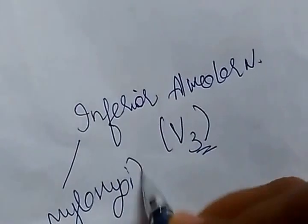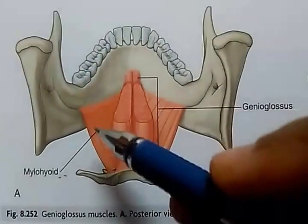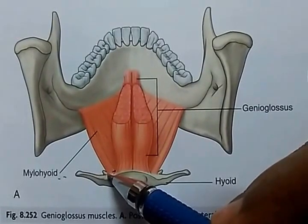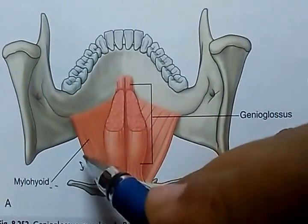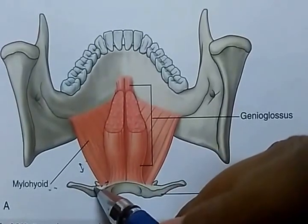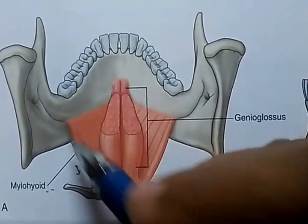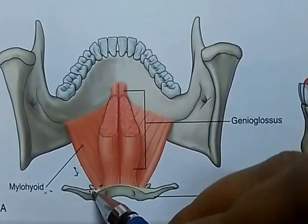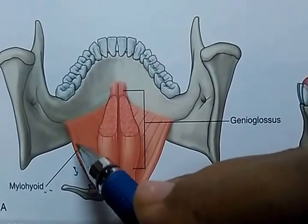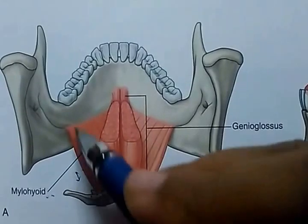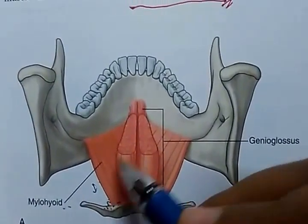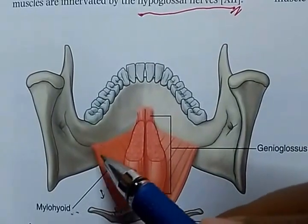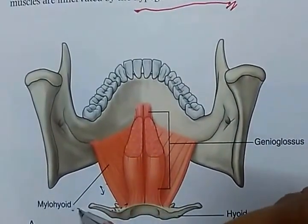The actions of mylohyoid depend on what is fixed. If the hyoid bone is fixed, it will depress the mandible. If the mandible is fixed, it will pull the hyoid forward and elevate the floor of the oral cavity. The third action is that it supports and elevates the oral cavity.